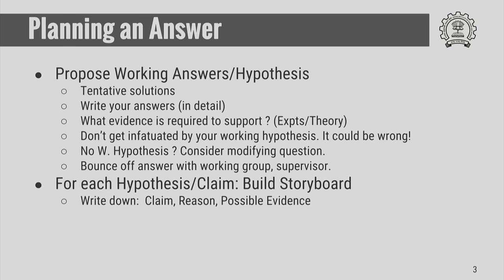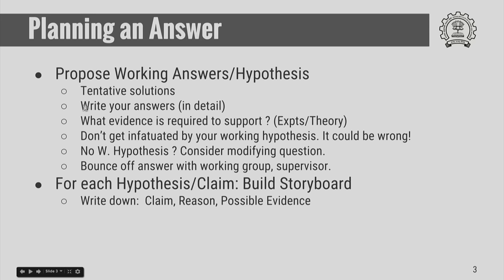You start off by proposing tentative solutions — tentative hypotheses, or working answers as they are called. Write down your answers in full detail: why you think this is possible and what evidence you need to gather to support the claim — a set of experiments, solutions of equations, simulations, or so on. It is very important that you do not get infatuated by the working hypothesis. Keep in mind this is just a working hypothesis, and whether it is true depends on the outcome of the experiments. It could very well be wrong. If you do not have a working hypothesis, simply modify your question so you can get some tentative answer to work on. Propose this answer to your working group or supervisor, then modify the answer or the steps of evidence you need to gather.